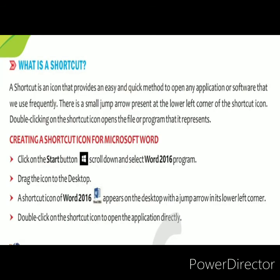Next — what is a shortcut? A shortcut is an icon that provides an easy and quick method to open an application or software that we use frequently. For example, if you are using Microsoft Word frequently and want to open it, normally you click the Start button, open All Apps, then search for Microsoft Office and click on Microsoft Word. But if you create a shortcut of Microsoft Word on the desktop, when you open the system you directly find that shortcut on the desktop screen. Double-click on it and Word will open — there is no need to go through the Start button. This saves searching time. There is a small jump arrow present at the left corner of the shortcut icon.